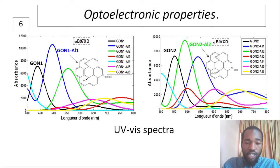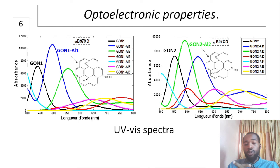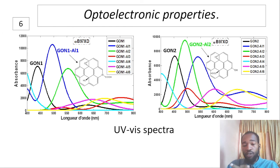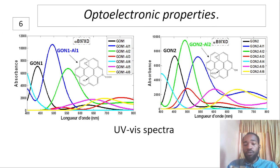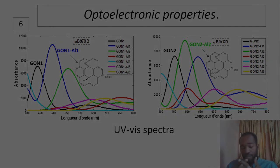Also, the evaluation of the impact of the nitrogen atom on the optoelectronic properties of both graphene oxide systems showed a redshift of the absorption spectra of the graphene oxide derivatives compared to those of the parent molecule, which is a good result. It should be noted that the substitution of the carbon atom supporting the functional group at the edge of the graphene oxide is found to be very effective in increasing its large absorption capacity.